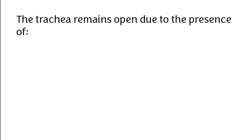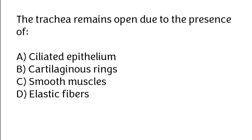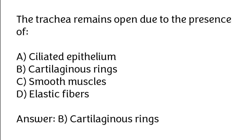The trachea remains open due to the presence of: (A) ciliated epithelium, (B) cartilaginous rings, (C) smooth muscles, (D) elastic fibers. The correct answer is option B, cartilaginous rings.